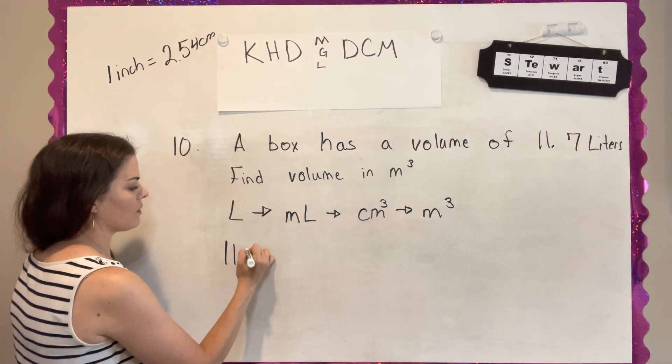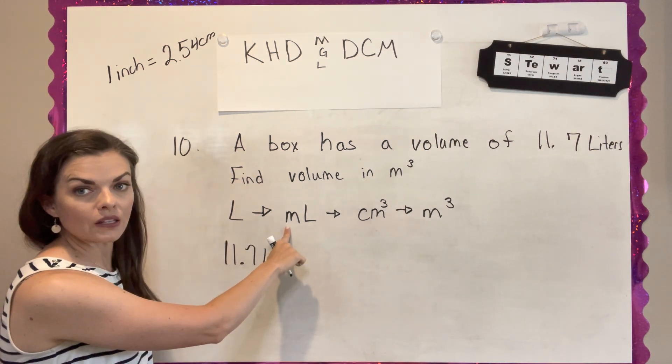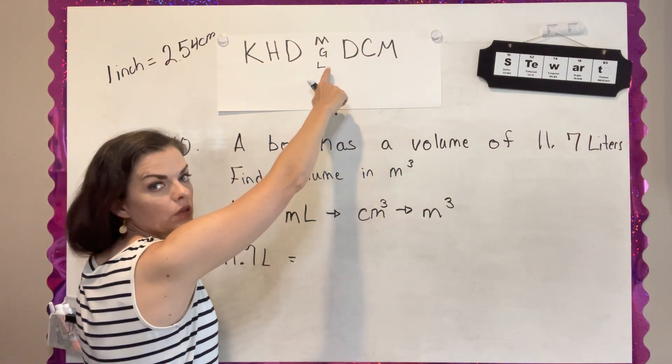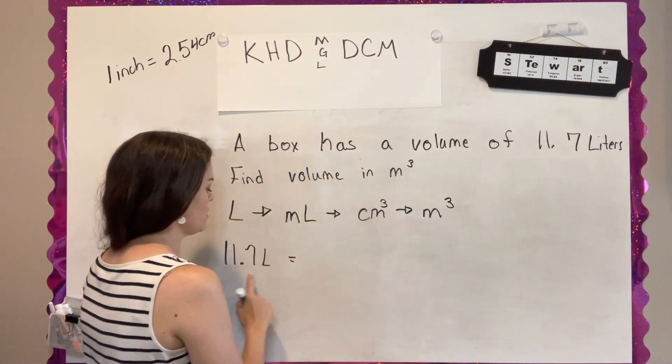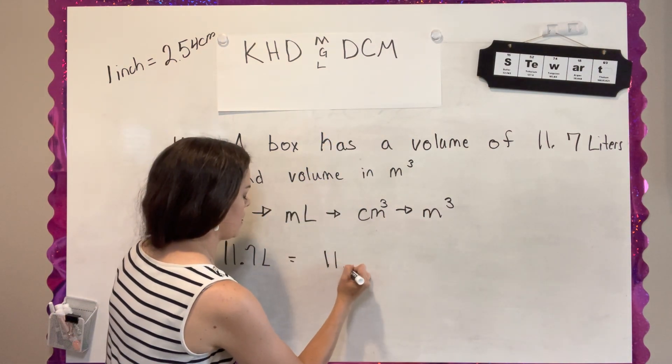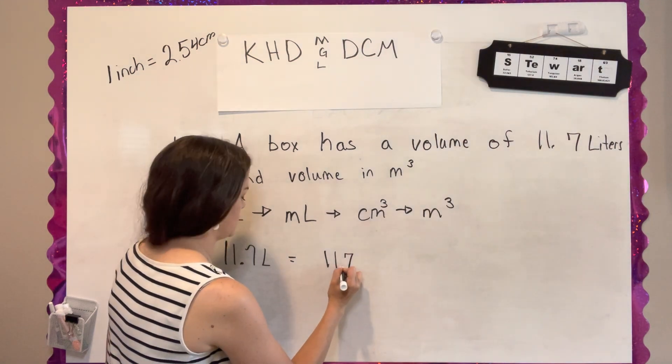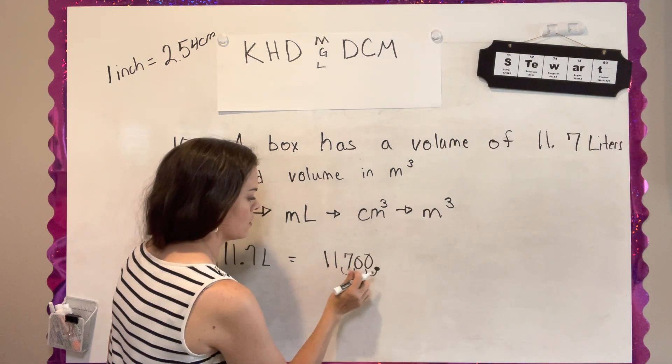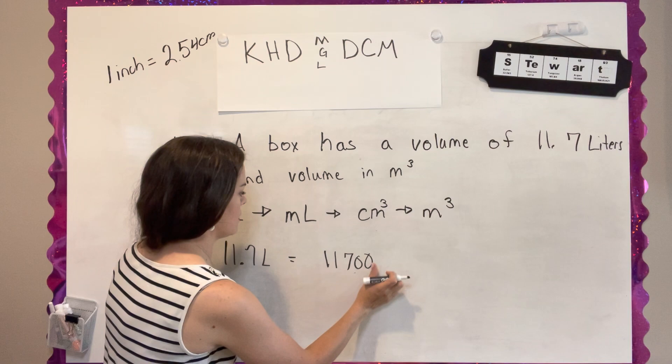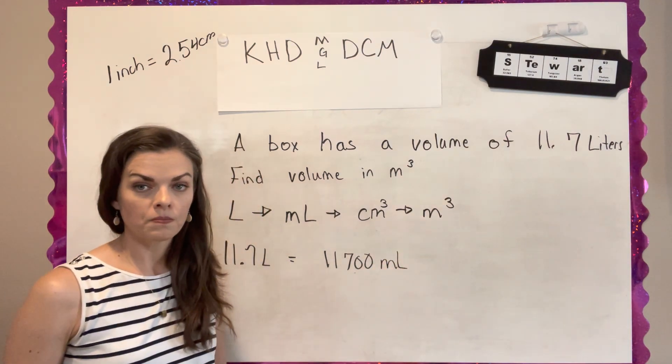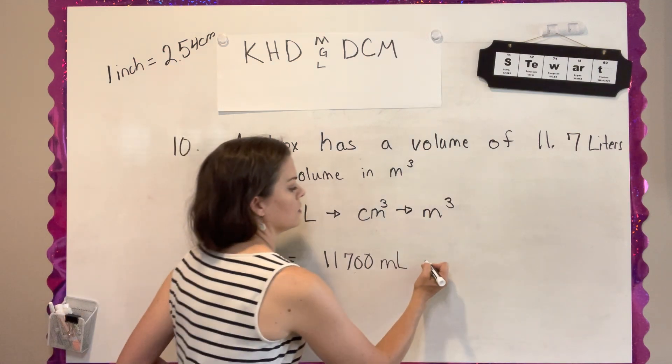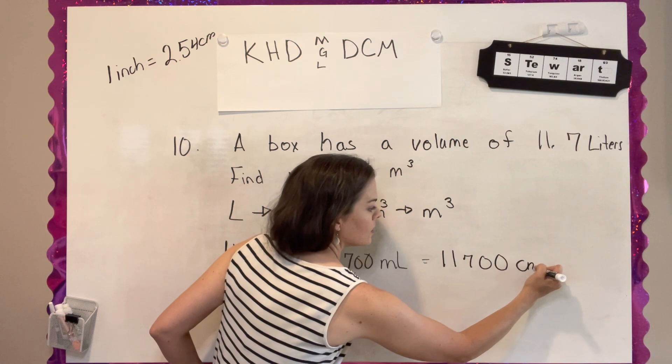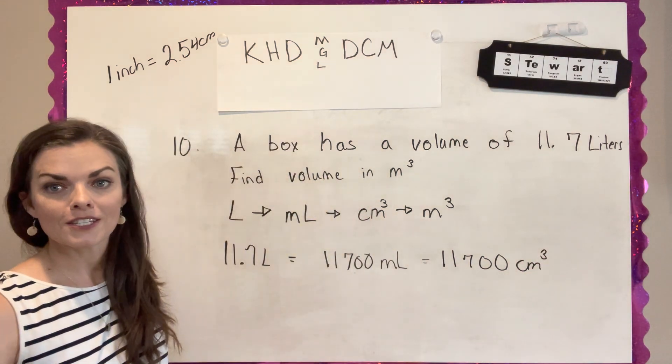So I've got 11.7 liters and I'm going to milliliters. So if I'm at liters to milliliters, I'm moving my decimal 1, 2, 3, three places to the right. So I have 11,700 milliliters. 11,700 milliliters is the same as 11,700 cubic centimeters or cc's.